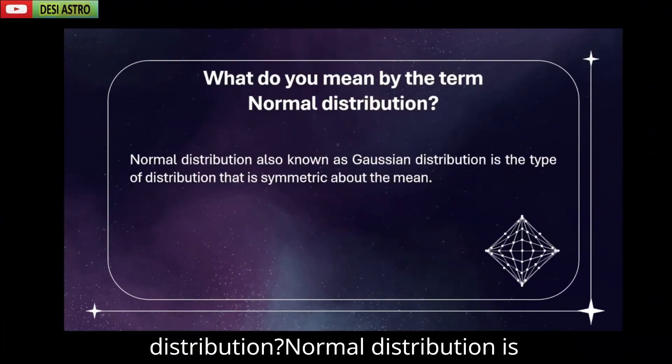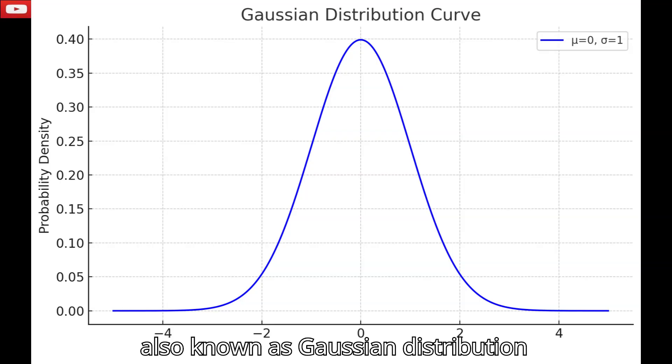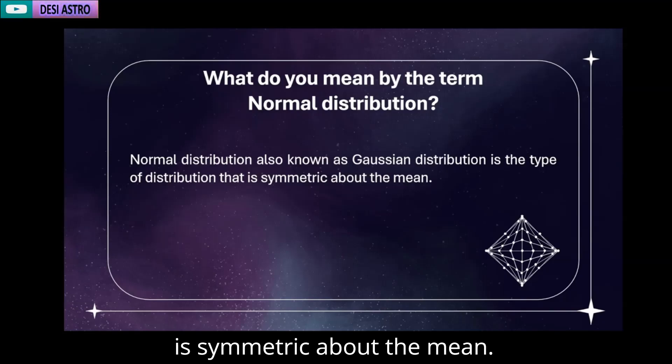What do you mean by the term normal distribution? Normal distribution, also known as Gaussian distribution, is the type of distribution which is symmetric about the mean.